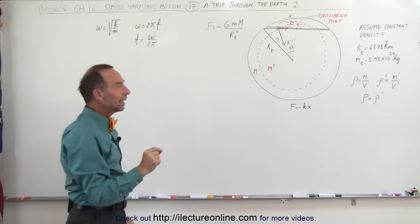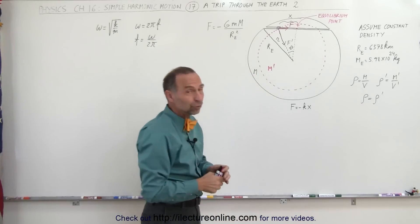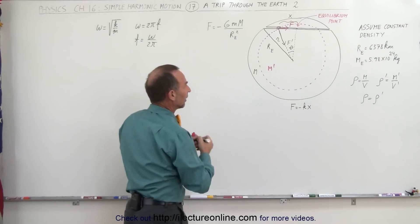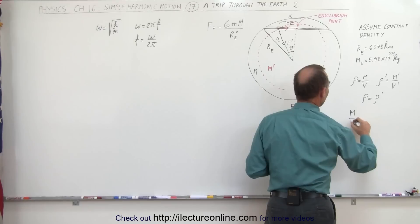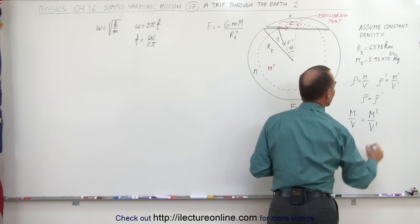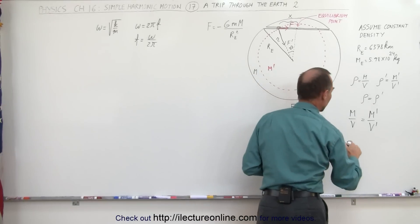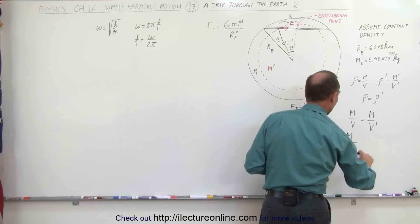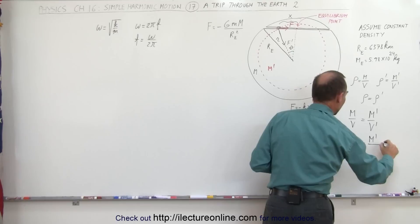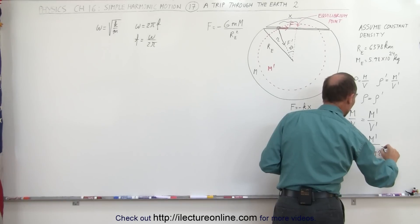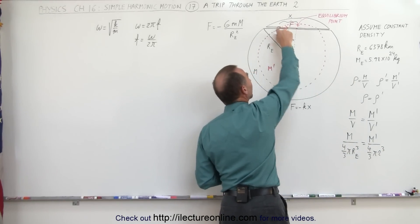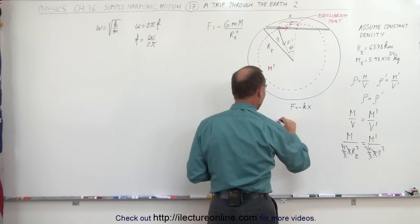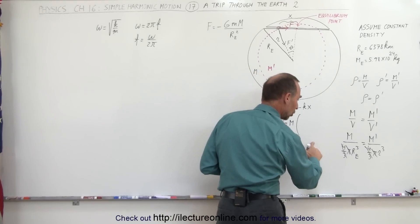We can find m prime in terms of m because m prime constantly changes, but m is a constant — the total mass of the earth. Setting the two densities equal: m divided by the volume of the earth equals m prime divided by v prime, the volume of the inner portion. The volume of the earth is four-thirds pi times the radius of the earth cubed, and v prime is four-thirds pi times r cubed. The four-thirds and pi cancel out, so m prime equals m times r cubed divided by the radius of the earth cubed.